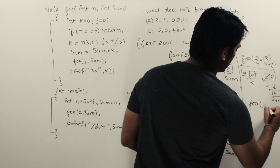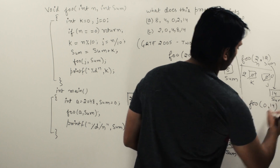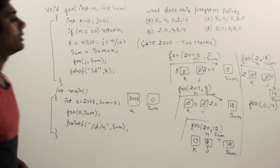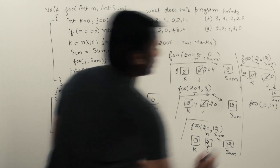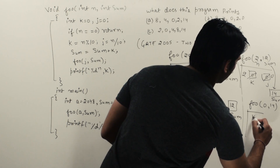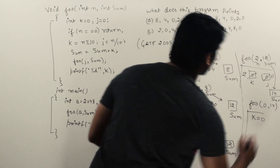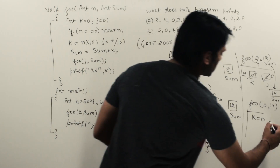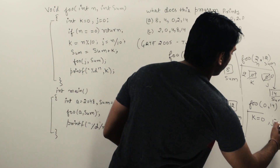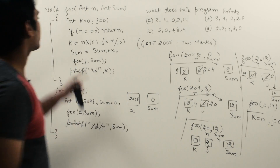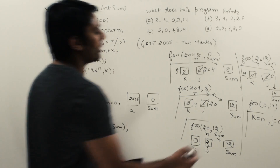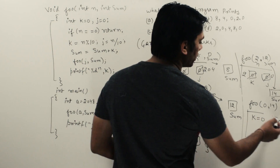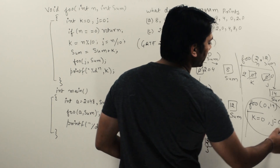When we call foo(0, 14), k and j are both 0. The condition if n is equal to 0 is true, so we return immediately. The control goes back to the previous call.